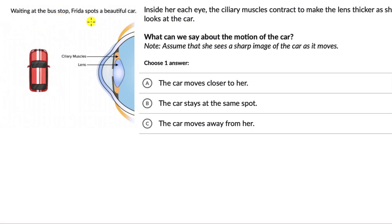Waiting at the bus stop, Frida spots a beautiful car. Inside her each eye, the ciliary muscles contract to make the lens thicker as she looks at the car.